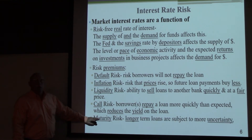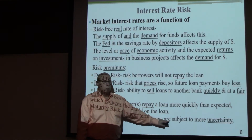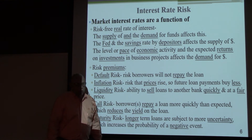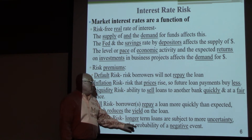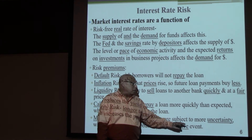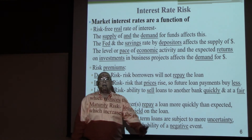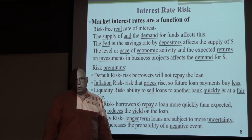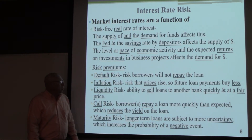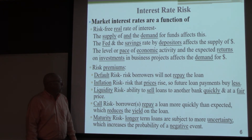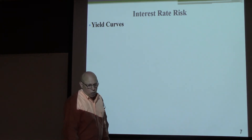And lastly, maturity risk — longer-term loans are subject to more uncertainty, which increases the probability of a negative event. A home loan over a 30-year period gives the borrower 30 years to become unemployed or bankrupt. So longer-term loans have more risk of negative events than short-term loans, and interest rates reflect that — though not always.